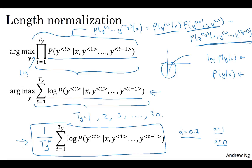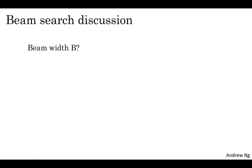And you get to play with this yourself in this week's programming exercise. Finally, a few implementation details. How do you choose the beam width B? The larger B is, the more possibilities you're considering, and thus the better the sentence you probably find. But the larger B is, the more computationally expensive your algorithm is, because you're also keeping a lot more possibilities around. So finally, let's just wrap up with some thoughts on how to choose the beam width B.